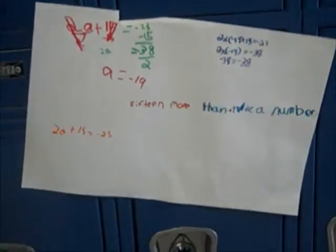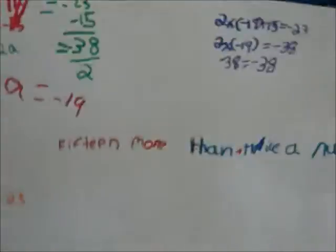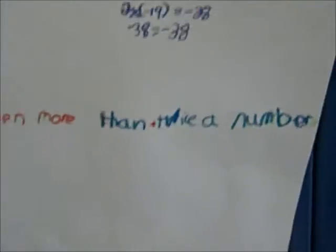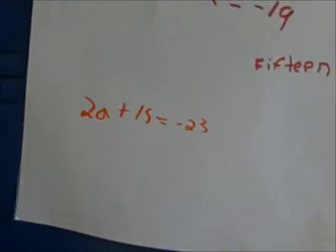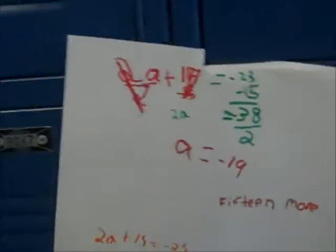Our problem is number 4, translating the words: it is 15 more than twice a number. So when you translate it, it's 2a plus 15 equals negative 23. What you do first is you subtract 15.